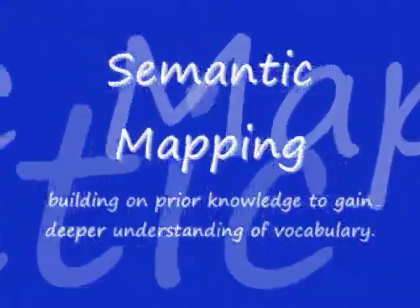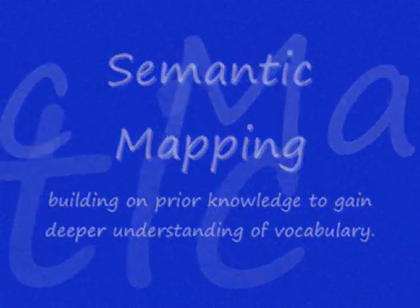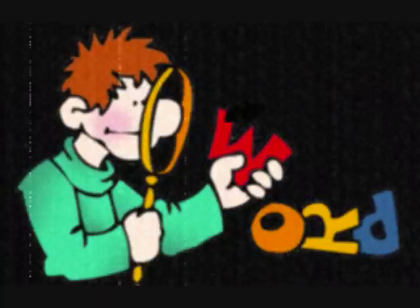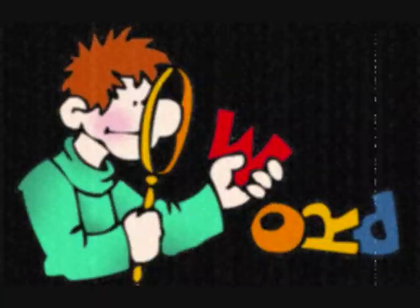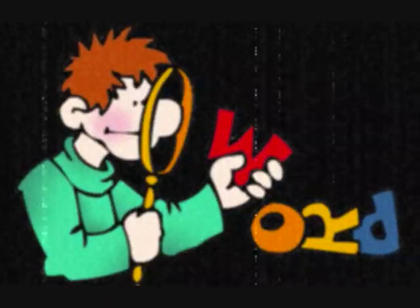Semantic mapping is used in all disciplines to show the relationship between ideas. It helps students discover the relationship between vocabulary words. Furthermore, it helps students see how ideas are related and helps them to identify and connect important details.